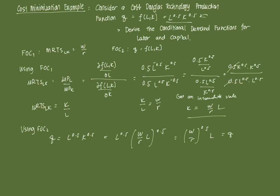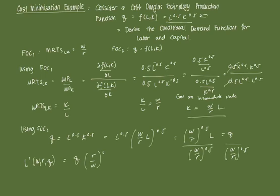Then all we have to do now is we're going to isolate it with respect to L. So we're going to divide both sides here by W over R raised to 0.5, and we get the conditional demand function for L, which is a function of W, R and Q, as just going to be Q times R over W raised to 0.5.